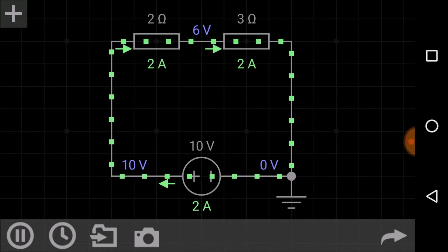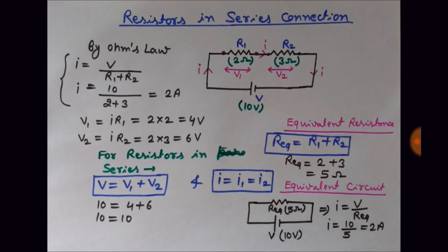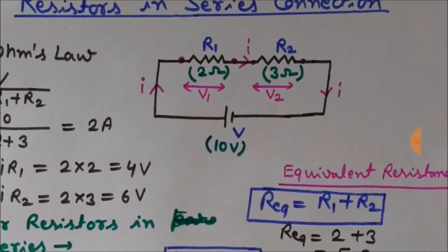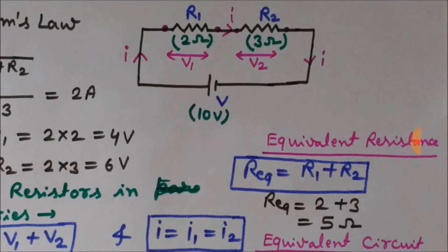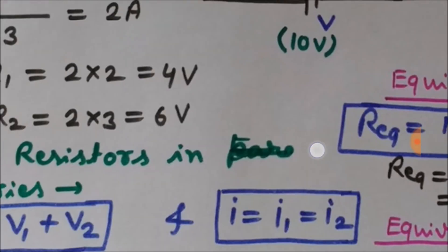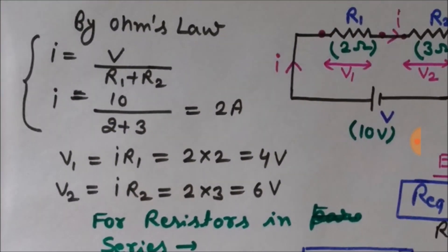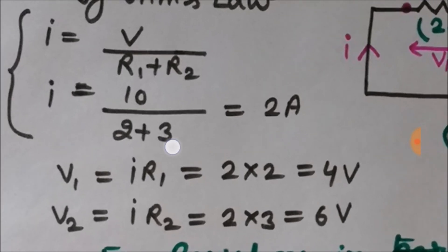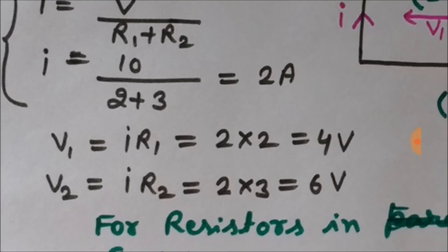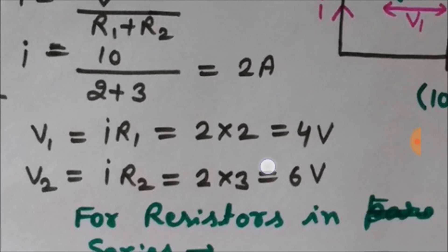Now let's look at the theoretical part and the formulas. Here we have the same circuit: two resistors of 2 ohm and 3 ohm connected in series with a 10 volt DC battery. The formula for equivalent resistance is R1 plus R2, so 2 plus 3 equals 5 ohm. Using Ohm's law, the current I equals V divided by the total resistance: 10 divided by 5 equals 2 amperes.